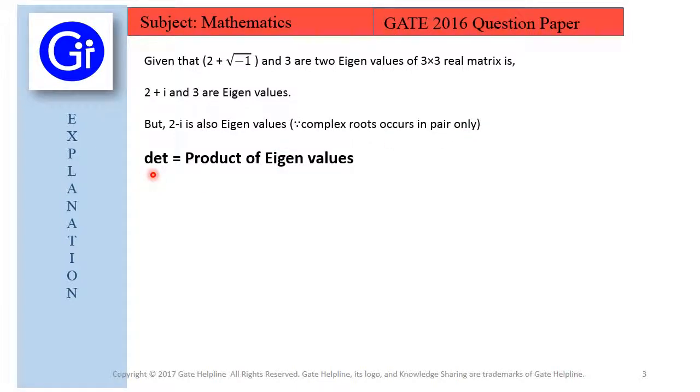So we know that determinant equals to product of eigenvalues. So we have the eigenvalues and we need to get the product of these eigenvalues to find the value of the determinant.